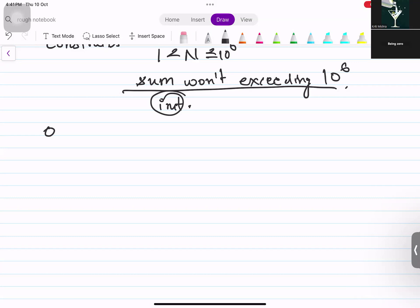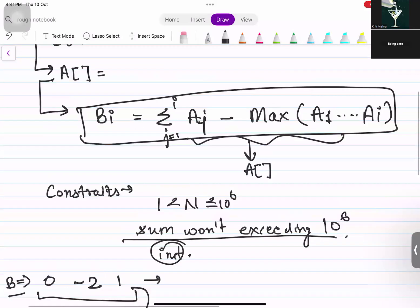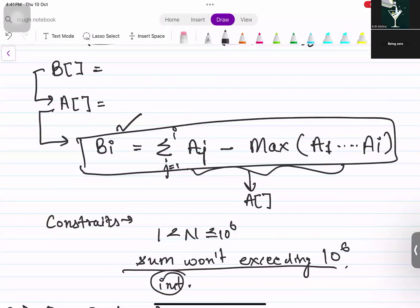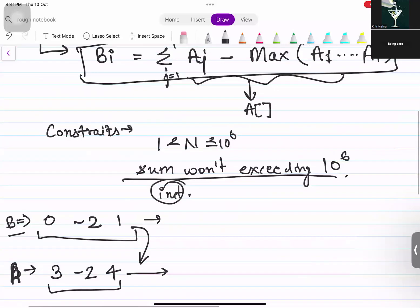I would be explaining a test case that is mentioned in the question, which is 0, -2, and 1. This is array B. One of the possible outputs which is mentioned in the question is array A, which would be 3, -2, and 4. From array A, we can produce array B using this formula which is given in the question itself. Let's see how we can do that.